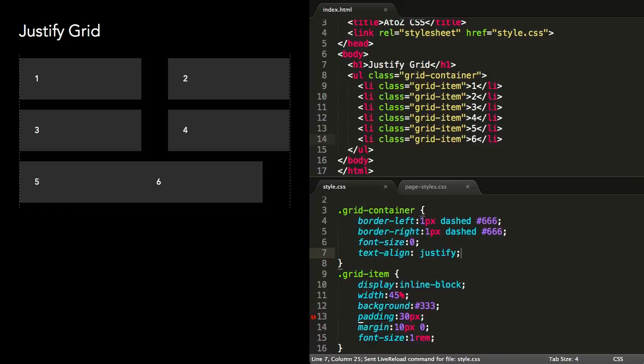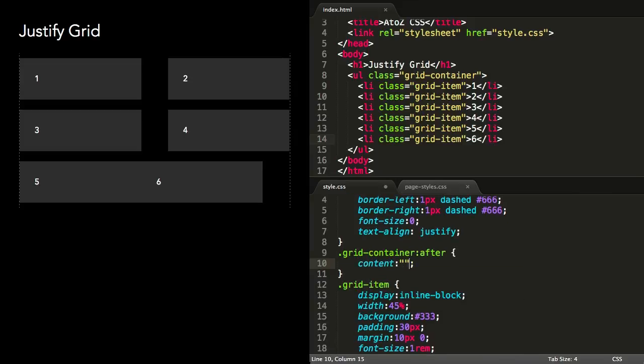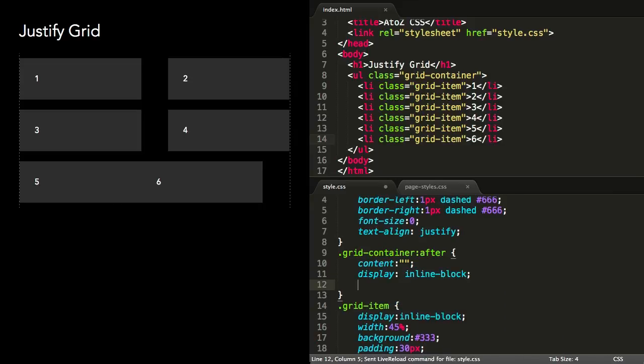But before the grid items will be equally spaced out, we need to create a full width hidden element that will determine the space in which to spread out the items. Using an after pseudo-element, a bit like the approach used in Clearfix, we can force the width of the grid container to be as wide as its parent.